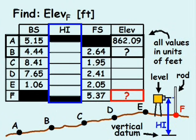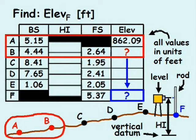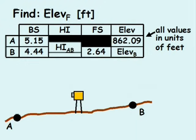Before we can find the elevation at point F, we first have to find the elevation at point B, and then we'll work our way down to point F, one point at a time. If we take a closer look at points A and B, we can better understand the leveling procedure.